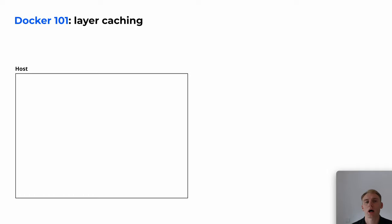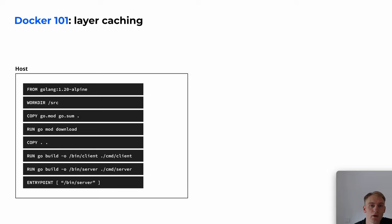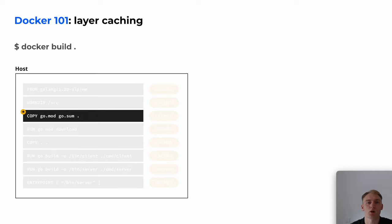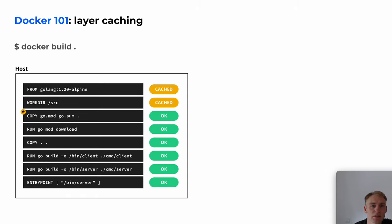Let's recall how caching works when we build images locally with Docker. We have the following Dockerfile and we start the build. Docker builds the container image layer by layer, running Dockerfile instructions. The build is successful and we have a built image. When we rebuild, everything will be taken from the local cache. If we modify go.mod and go.sum in the project and build the image again, this leads to the rebuild of all layers from the corresponding one. On the next rebuild, everything will be taken from the cache.